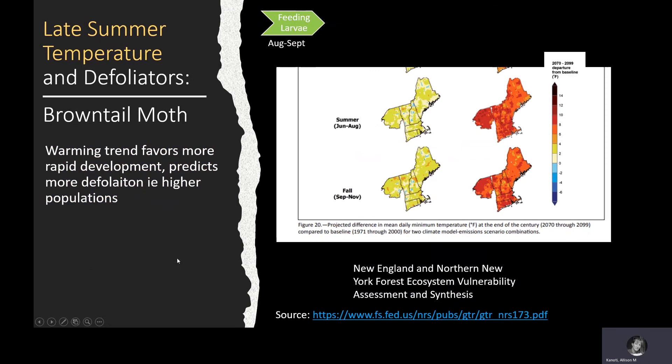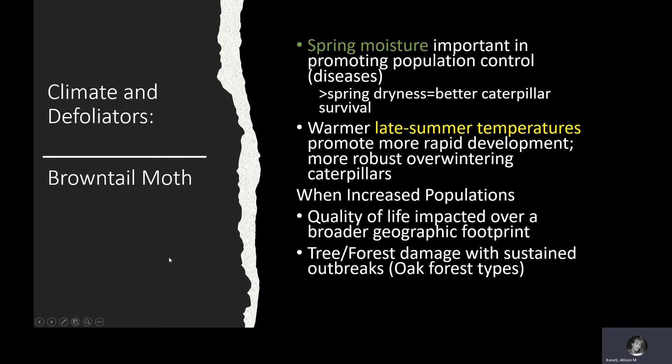As far as late summer temperature, the models are in agreement: it's going to be an upward trend, and that's going to favor more rapid development of overwintering larvae — we should expect more defoliation and higher populations of brown-tailed moth. In summary, spring moisture promotes population control through disease; spring dryness leads to better caterpillar survival. Warmer late summer temperatures produce more robust caterpillars with better overwinter survival. Increased populations over a broader area will impact quality of life and lead to more tree and forest damage with sustained outbreaks.